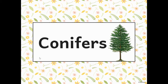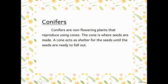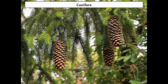The first type of non-flowering plant we're going to talk about is called the conifers. Conifers are non-flowering plants that reproduce using cones. The cone is where seeds are made — a cone acts as a shelter for the seeds until they are ready to fall out. The word conifer comes from the word cone. Remember from when we talked about plant structures — cones are woody, have scales, and stay closed until they get their pollen, then the cone opens and lets the seeds fall out. Here is a picture of a conifer with cones that look about ready to open.